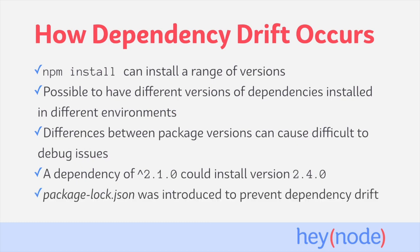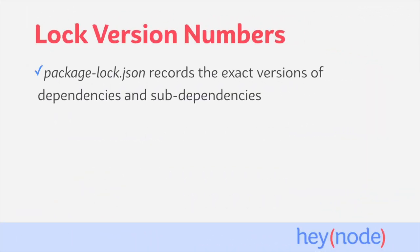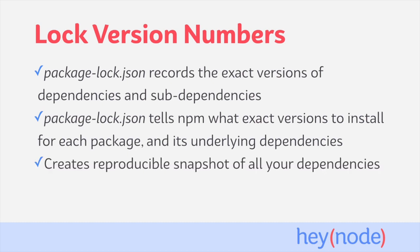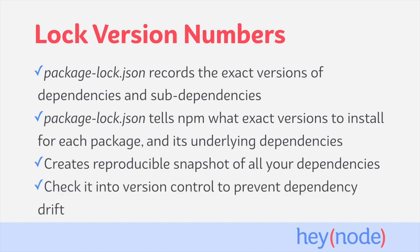Luckily, package-lock.json was introduced to help prevent drifting of your dependencies. The package-lock.json file records the exact versions of not only your dependencies, but of your dependencies' dependencies. When present, package-lock.json will tell npm what exact versions of every package is required and the versions of those packages' own dependencies. This creates a reproducible snapshot of all your dependencies and essentially locks them down until you tell npm to update a package. Checking this file into version control will distribute the file with your project, making sure everywhere the application is run it uses the same versions of all dependencies, effectively preventing dependency drift entirely.